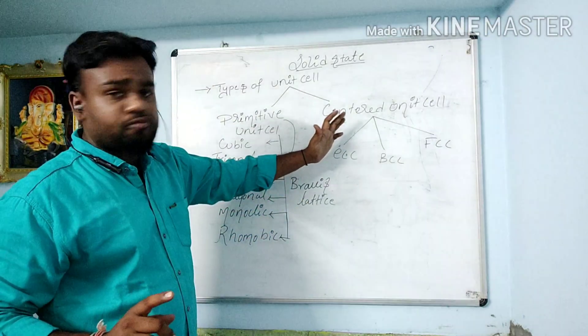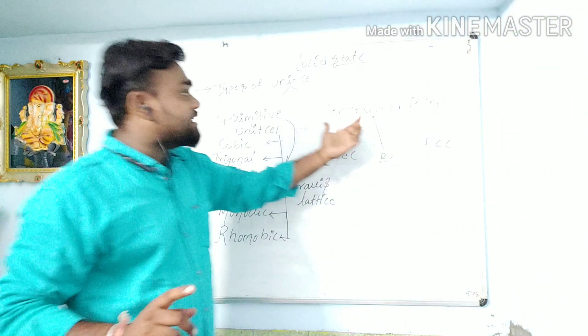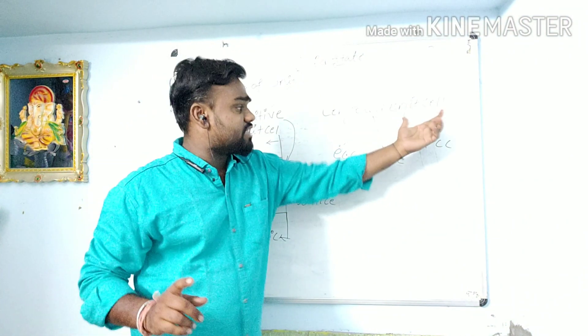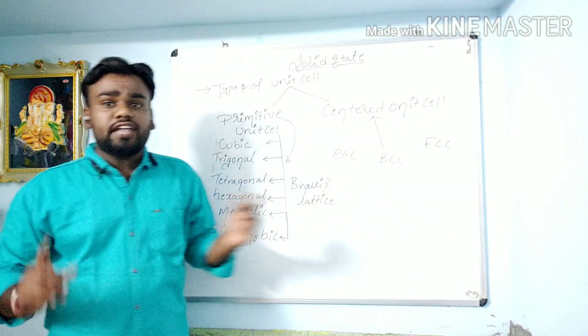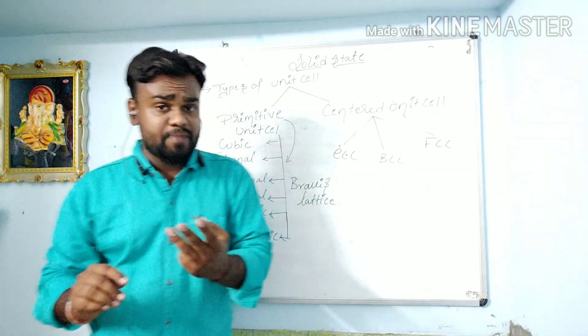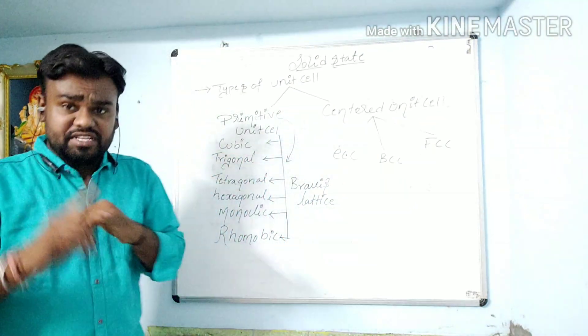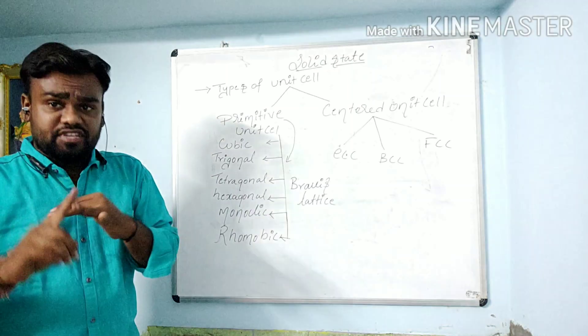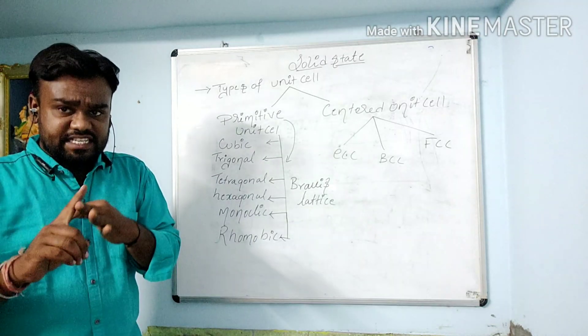Now we go to another type of unit cell — centered unit cell. Centered unit cell is further classified into three types: BCC (body-centered cubic), FCC (face-centered cubic), and ECC.